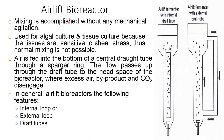The second type of vertical column photobioreactor is the airlift bioreactor. Here, mixing is accomplished without any mechanical agitation. It is used for algal culture and tissue culture because the tissues are sensitive to shear stress, making normal mixing impossible. Air is fed to the bottom of the central draft tube through a sparger ring. The flow passes up through the draft tube to the headspace of the bioreactor where excess air, byproducts, and carbon dioxide disengage. In general, the airlift bioreactor consists of the internal loop, the external loop, and other draft tubes.